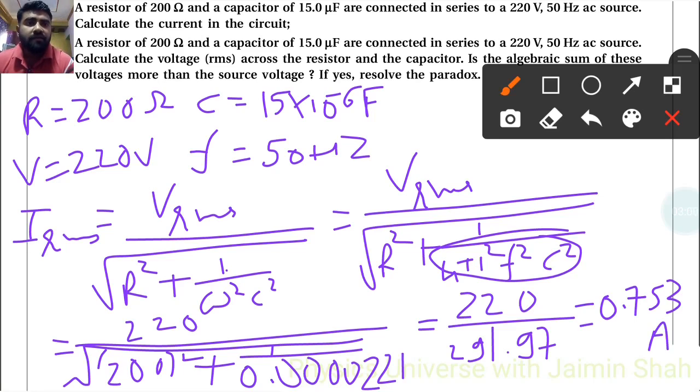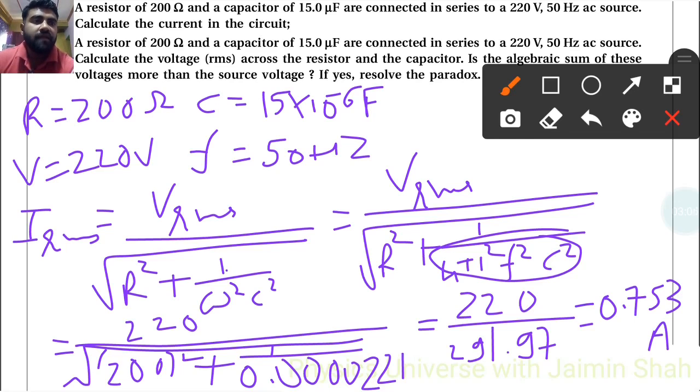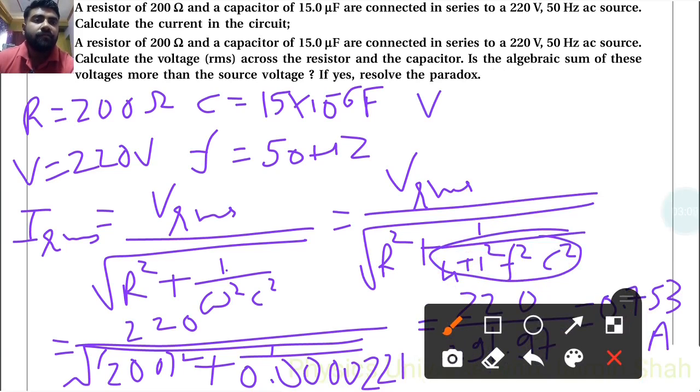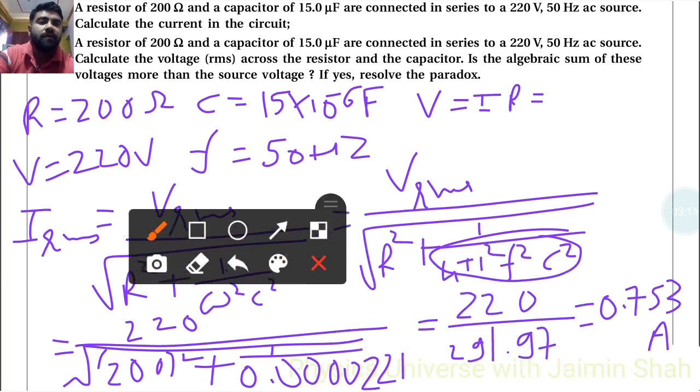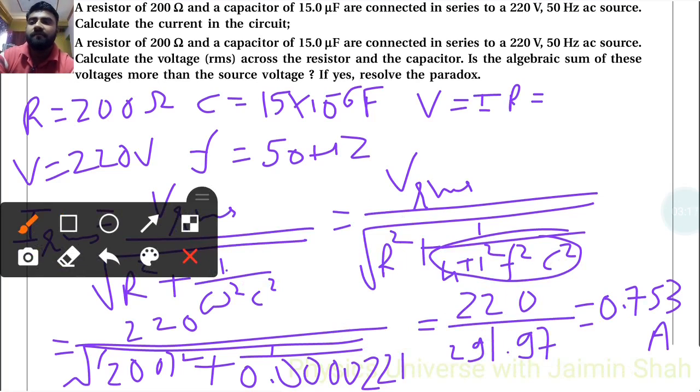220 upon that value, that is 0.753 ampere. So that is I_RMS value. Now calculate the V_RMS across the resistor and capacitor. First of all, V_RMS across resistance: V equals IR. I is earlier we found that, 0.753.